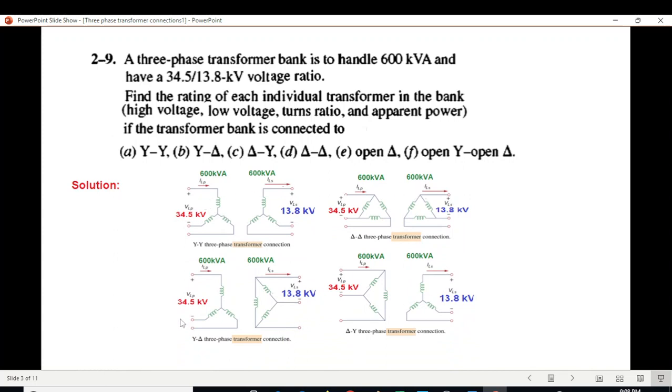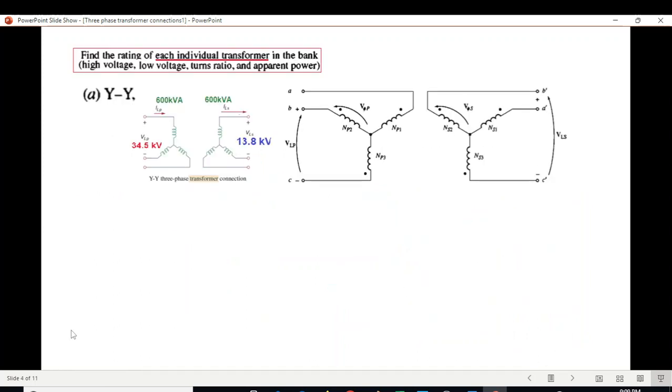In this basic configuration we can see 34.5 primary voltage - that's the line-to-line voltage. Secondary side is 13.8, also a line-to-line voltage. The line voltage is given in all four cases: Y-Y, Y-Delta, Delta-Y, and also open-Delta and open-Y. Let's discuss the Y-Y connection first, which is given here.